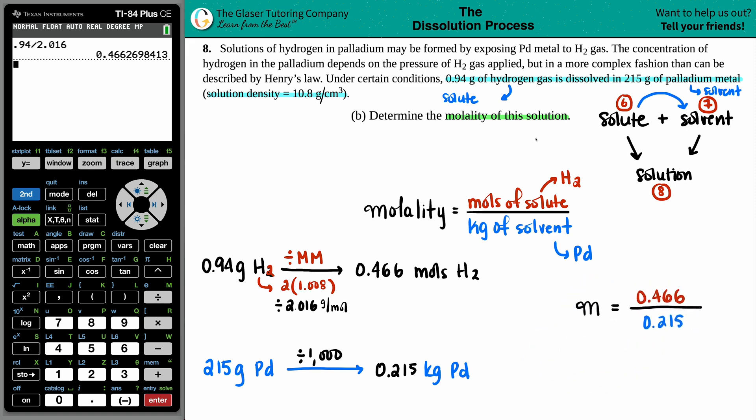Now we just divide. I'll take the whole number 0.466 because it's best not to round until the end. Dividing by 0.215 gives 2.2 with two significant figures. The unit for molality is the lowercase m. That's our answer: 2.2 m.